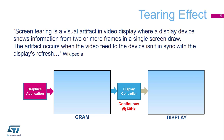Usually, the GRAM contains only the content of a single frame. It is sent directly to the display 60 times per second, but must also be updated regularly depending on the content to be displayed. When the GRAM contains only one frame, some tearing may appear on the display when reading and writing from and to this GRAM. Screen tearing is a visual artifact where a display device shows information from two or more frames in a single screen draw. The artifact occurs when the video feed to the device isn't in sync with the display refresh. If reading and writing from and to this GRAM is not carefully handled, some tearing effect may appear.